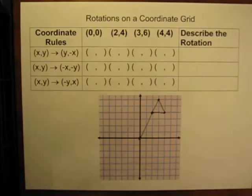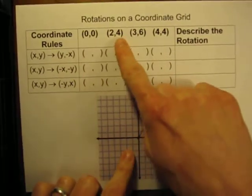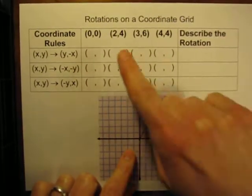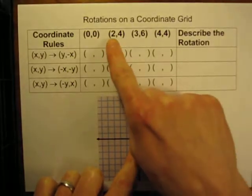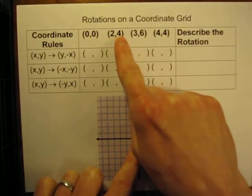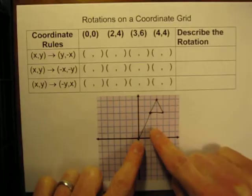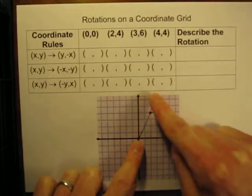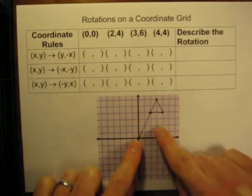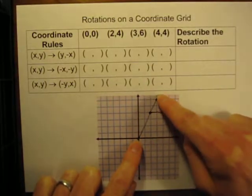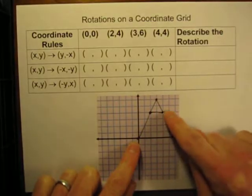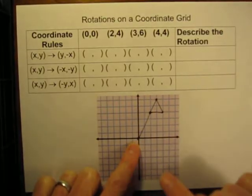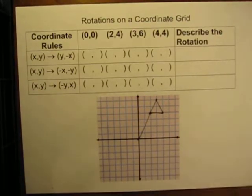The way I have this problem set up is I'm starting with four points: one point right at the origin, another point at the coordinates right 2, up 4, another at right 3, up 6, and one at right 4, up 4. So we're starting with that little flag right there.